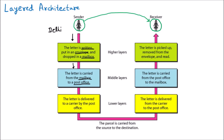Afterward, the letter is delivered from the post office to a carrier — the transmission medium. Let's suppose the letter travels via train or plane depending on the destination. The carrier is the transmission medium used between source and destination.